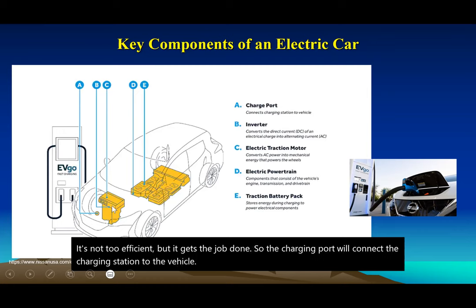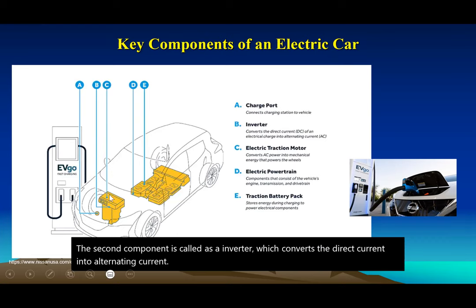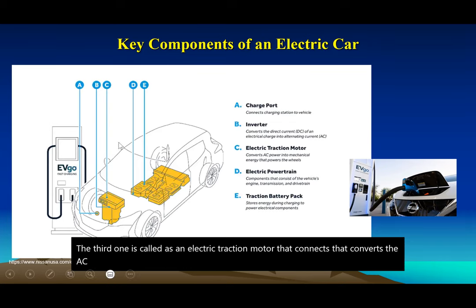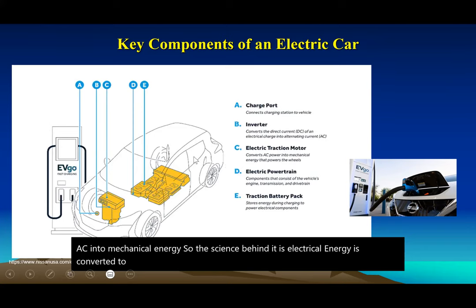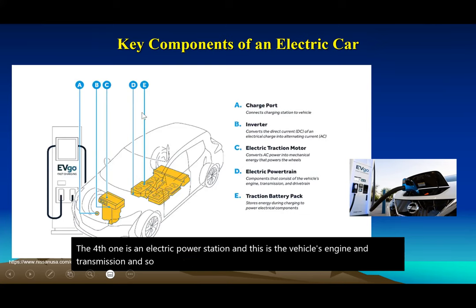The second component is an inverter, which converts direct current (DC) into alternating current (AC). The third is an electric traction motor that converts AC into mechanical energy — electrical energy is converted to mechanical energy to spin the wheels. The fourth is an electric power station, which is the vehicle's engine and transmission. The fifth is the battery, which is the most expensive part of the car.